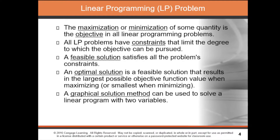In Chapter 1, we focused on creating the objective function and the constraints. The identification of the feasible region and optimal solution was easier in the previous chapter because there was only one constraint. In reality, problems usually involve more than one constraint, so you can make use of a graphical solution.